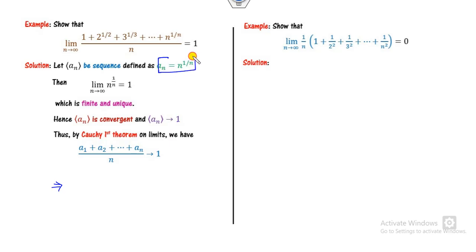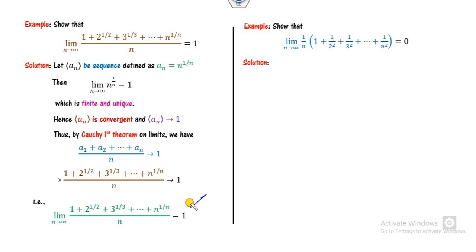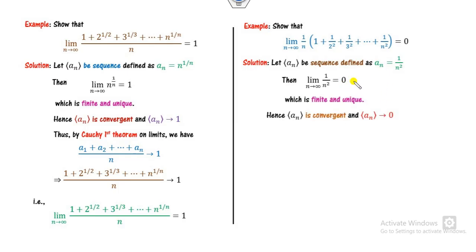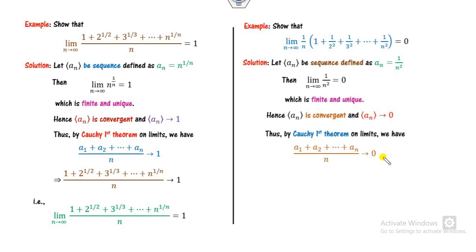Here a_n is the nth term: a_1 is 1, a_2 is 2^(1/2), and so on. We get the same limit as the sequence. For the second example, consider a_n = 1/n². Compute the limit, which is 0 — unique and finite — so it is convergent. By Cauchy's first theorem, the average (which is (1/n) times the sum) also converges to the same limit 0.